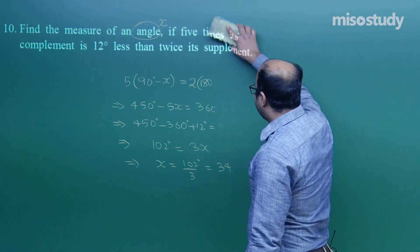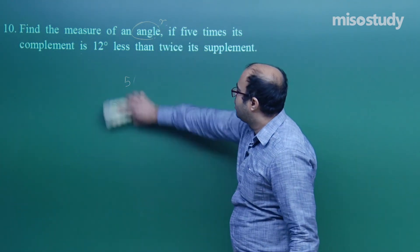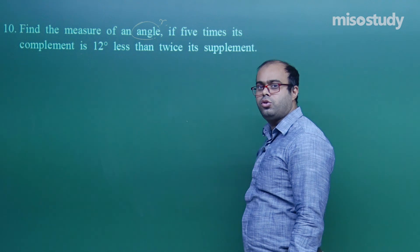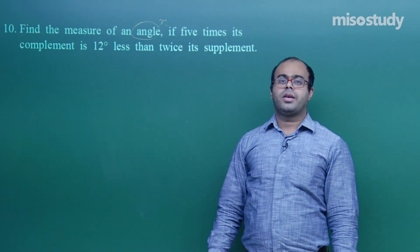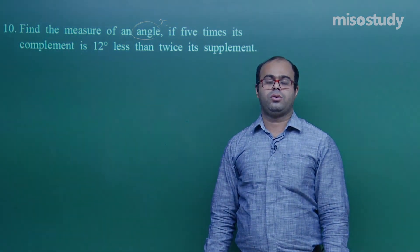With this, we complete the CBSE pattern exercise of this chapter — introduction to Euclid geometry. Students, keep practicing. Thank you.